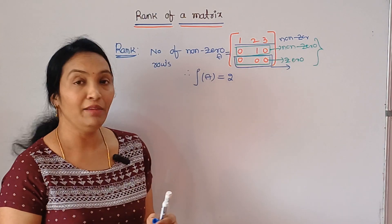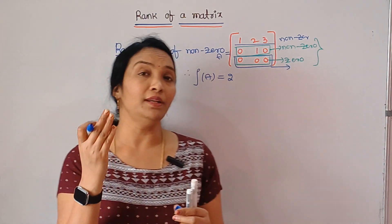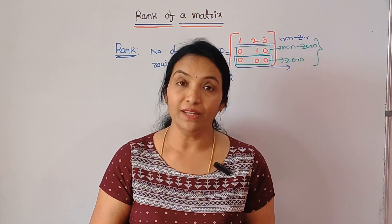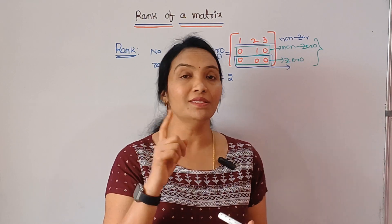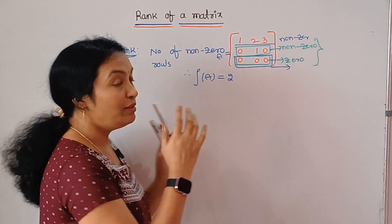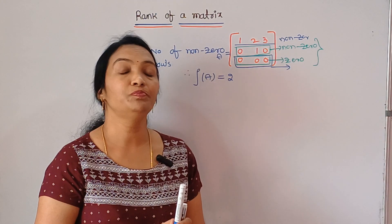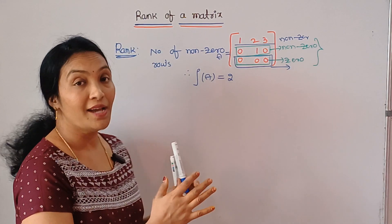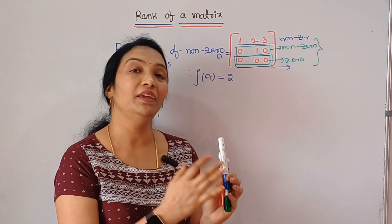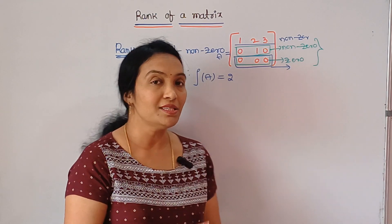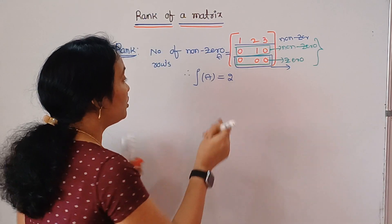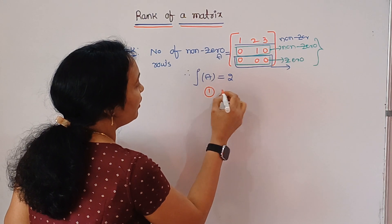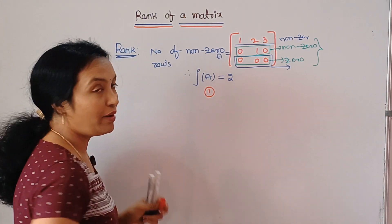In general, we have three types of methods to find the rank: one is the Echelon form, another one is the Normal form, and the last one is the PAQ normal form. The first two are very most important. I will tell one by one.